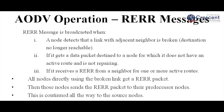Another type of message is the route error message. It is broadcasted when a node detects that a link with an adjacent neighbor is not available, or if it gets a data packet destined to a node for which it has no active route, or if it receives a route error from its neighbor for one or more active routes. In all these cases, it sends back the route error message to the source. All nodes directly using the broken link get a route error packet, and those nodes send it to their preceding nodes, continuing all the way back to the source. In AODV, routes are established and maintained by the route maintenance procedure until a node becomes inaccessible or the route is no longer desirable.